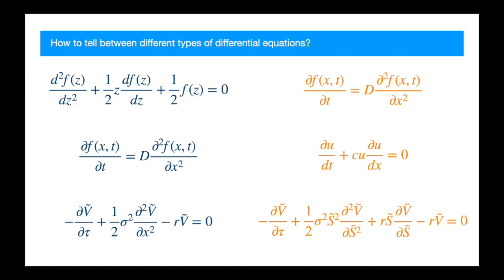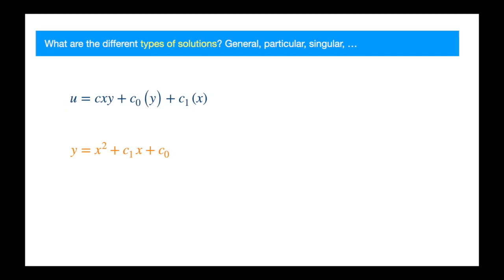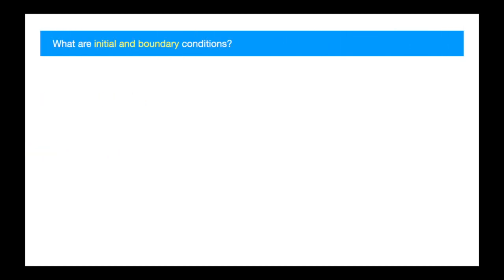We will discuss the different types of solutions, and this shall include things like, does the general solution capture all possible solutions? When would the general solutions contain arbitrary functions, as opposed to arbitrary constants that we see in the simple cases? We shall then discuss the various types of initial and boundary conditions.